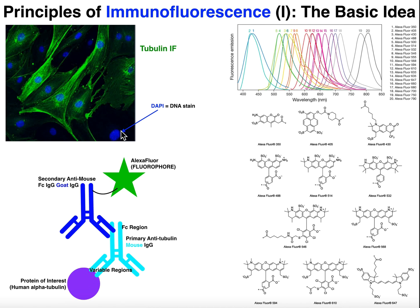Something you might also see is DAPI. DAPI stands for diamidino phenyl indole, and this is a stain used to stain DNA — it's always blue. Here's the DNA, and this is usually representative of where the nucleus most likely is, assuming it's a eukaryotic cell, which in this case it is because it's human. DAPI gives some perspective of the protein of interest, particularly if that protein is associated with the nucleus.